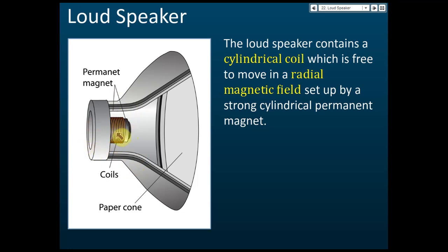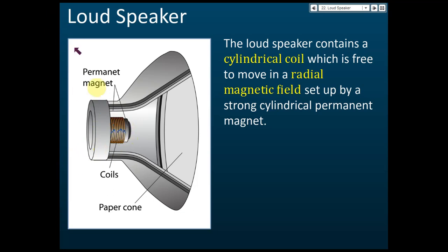There is a paper cone attached to the coil. When current flows — say, upward — it produces a force that moves the paper cone, for example to the right. If the current flows backward, it moves to the left. So if the current alternates up and down, the cone vibrates. This vibration moves the paper cone, forcing the surrounding air to vibrate at the same frequency, producing sound.